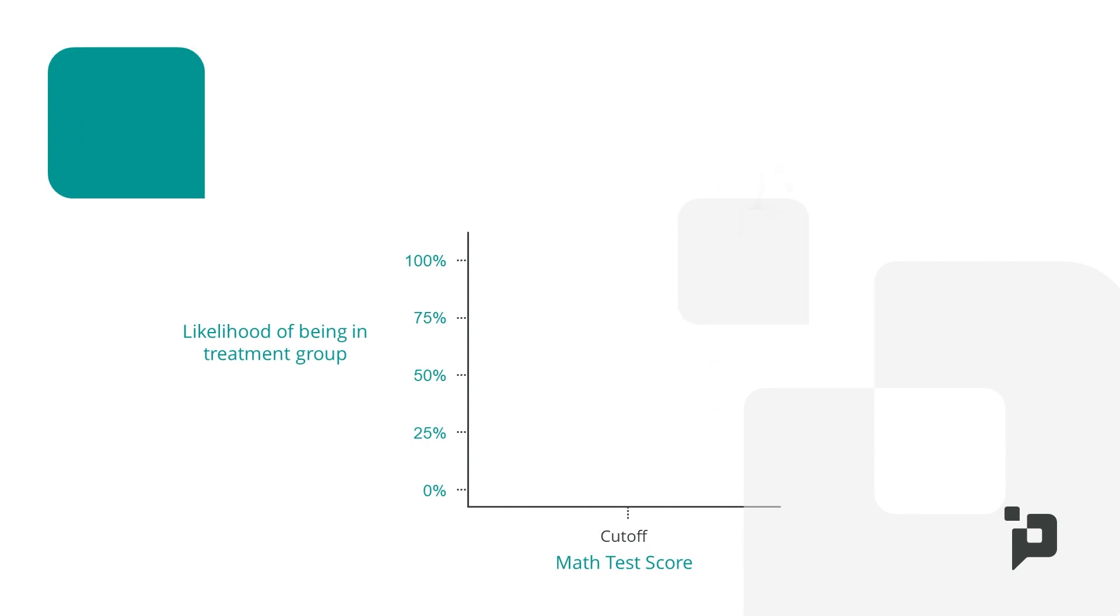Now, there are times when you should not use a regression discontinuity design. For example, when the treatment assignment is not just based on a single variable.